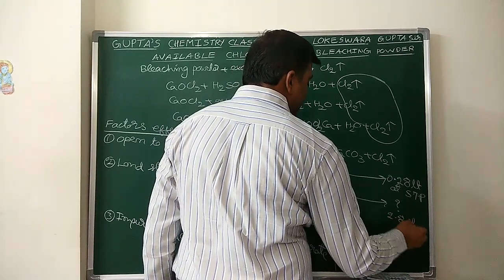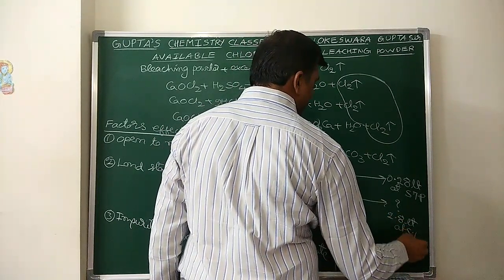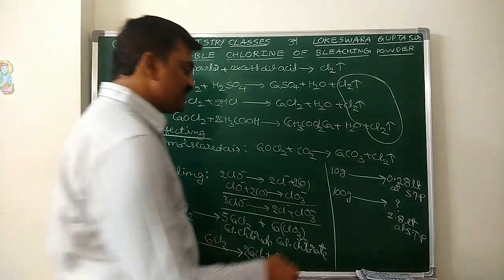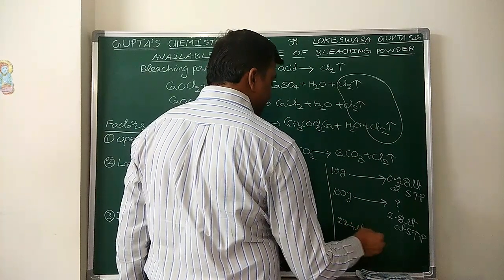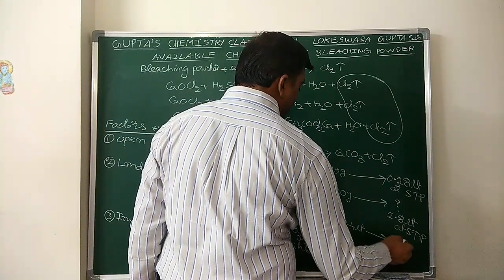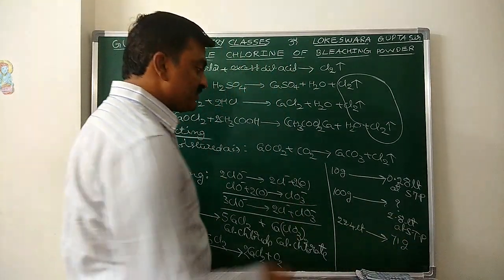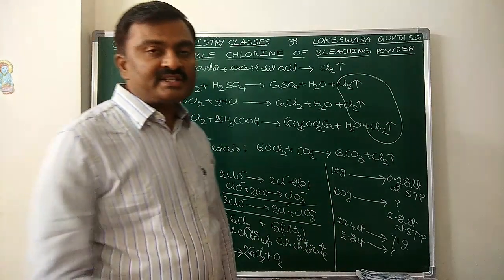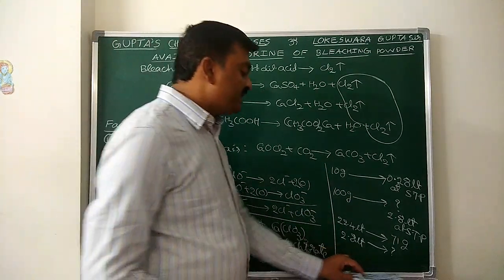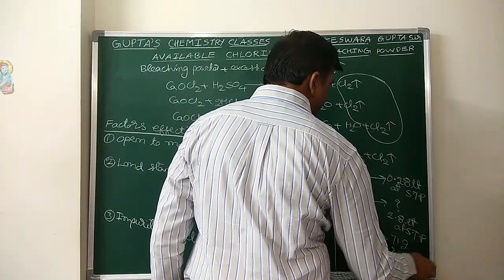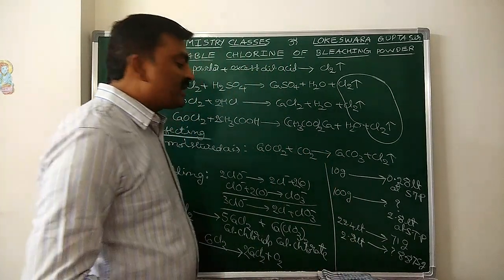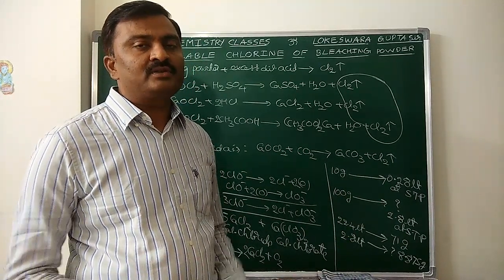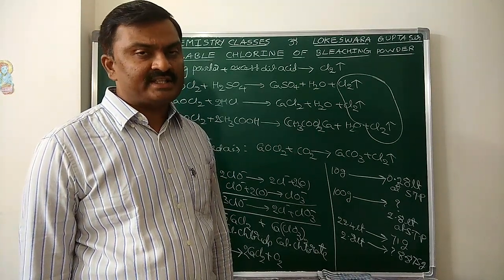2.8 liters of Cl2 at STP is liberated from the 10 gram sample. Now, 22.4 liters at STP corresponds to one molecular weight of Cl2, which is 71 grams. So 2.8 liters at STP corresponds to a weight of 71 divided by 8, which is approximately 8.875 grams. So from 100 grams of bleaching powder, 8.875 grams of Cl2 is liberated. Therefore the percentage of available chlorine is 8.875%.